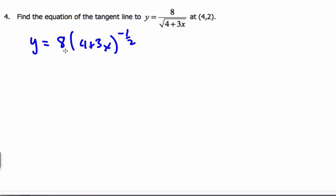I want to find the derivative of this. In order to find the derivative, which is equal to the slope of the tangent, I pull down my 1 half. So, 8 times 1 half negative is going to be negative 4.